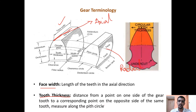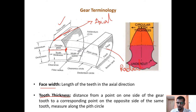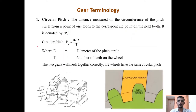Tooth thickness is the distance from a point on one side of the gear tooth to a corresponding point on the opposite side of the same tooth, measured along the pitch circle. So taking a point on one side and the corresponding point on the opposite side of the same tooth, the distance measured along the pitch circle is the tooth thickness.